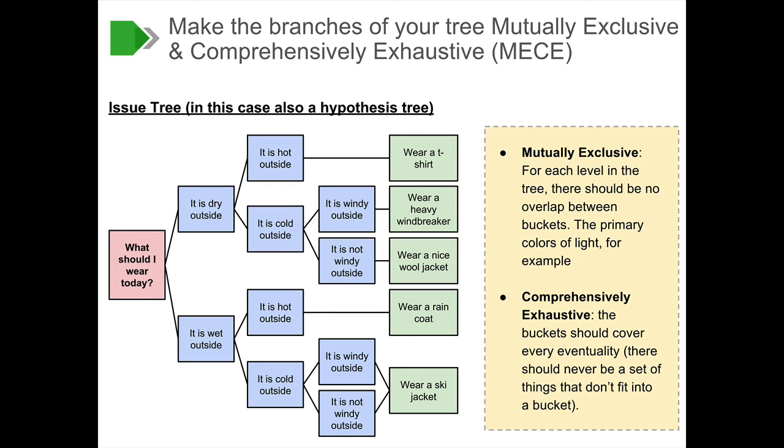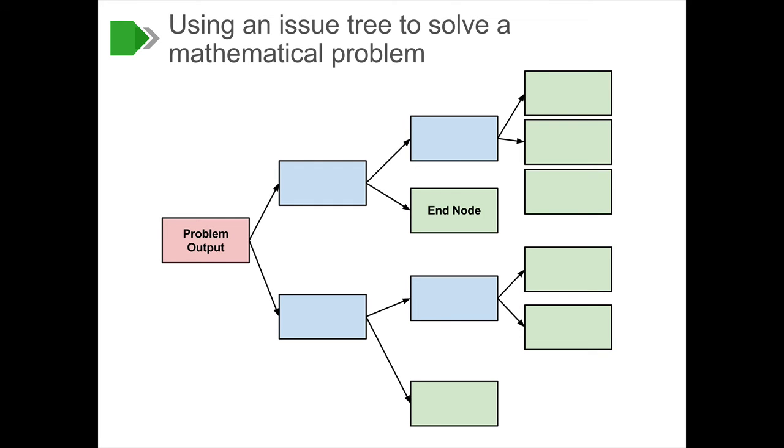Now let's use our issue tree and MECE concepts to get into some numbers. Assume you have the same issue tree as before, but this time, the relationship between the variables is mathematical. Perhaps the first layer in the tree needs to be subtracted from one another. Whereas some of the sub layers of the tree need to be multiplied by each other, added and subtracted or divided. You could see how, starting with some values in the green cells, you could work your way up to an answer in the red cell.